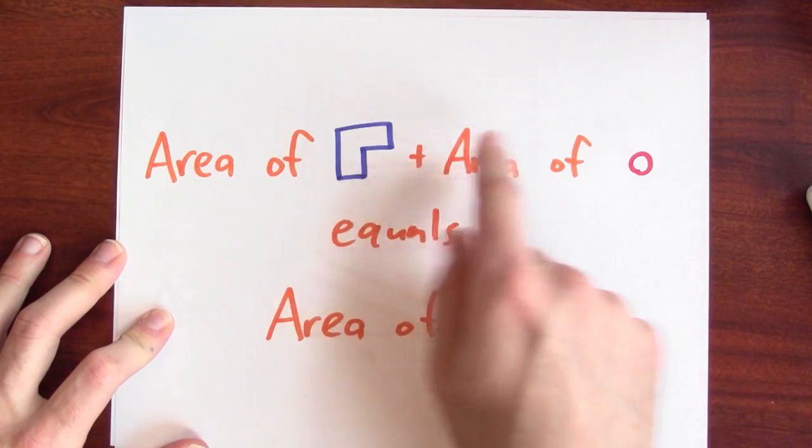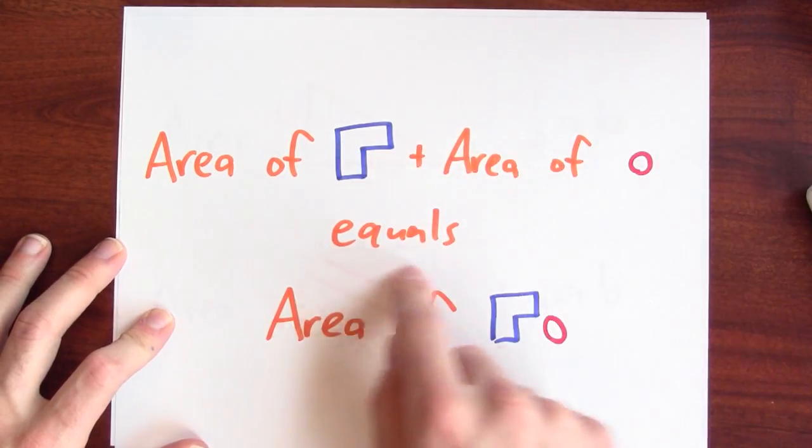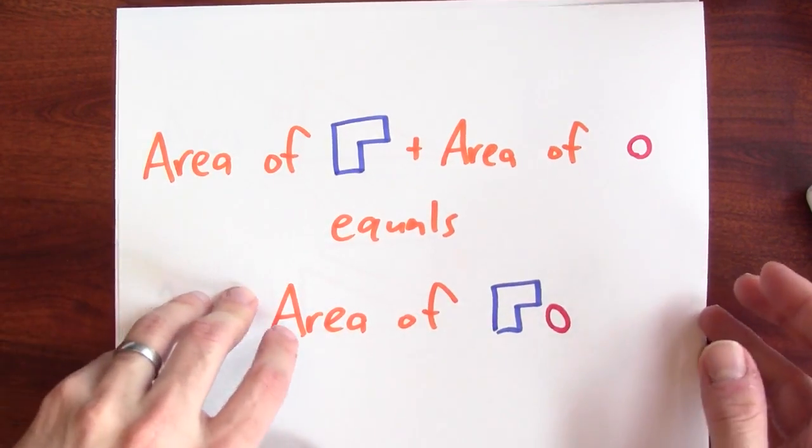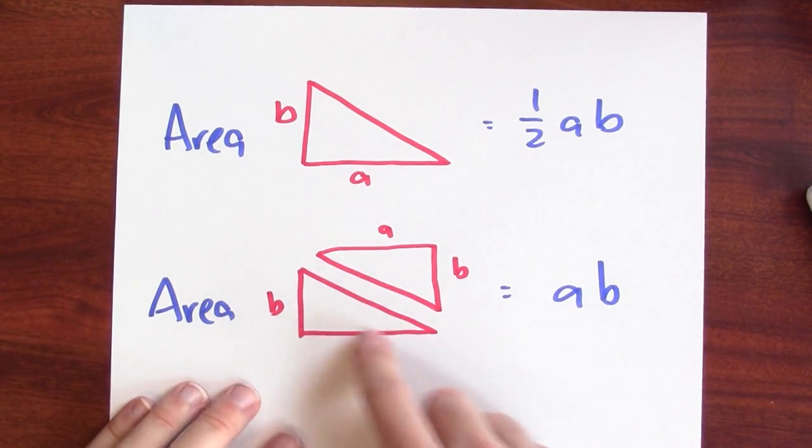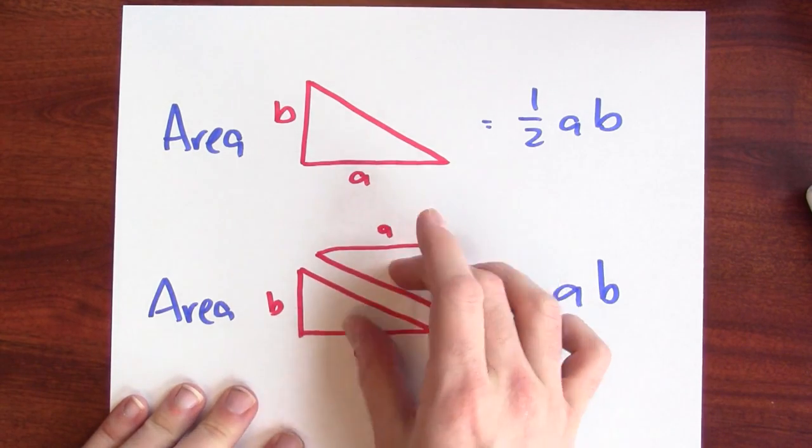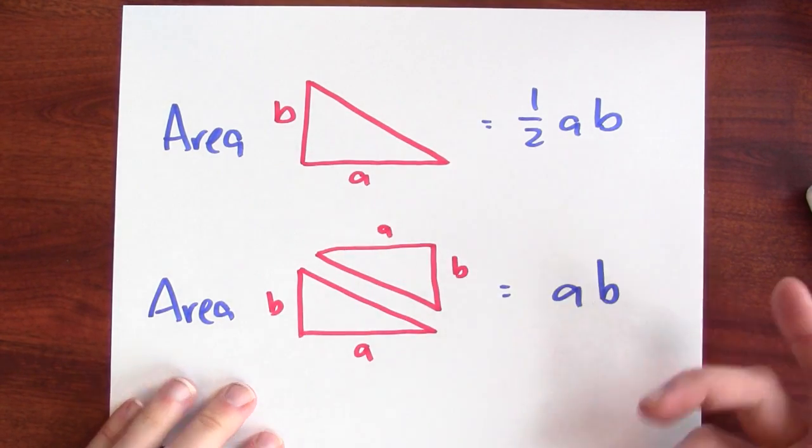Area of some figure plus area of some other figure is equal to the area of those two things together. In this particular case, the area of this triangle plus the area of this triangle is the area of these two things together, which is the area of a rectangle.